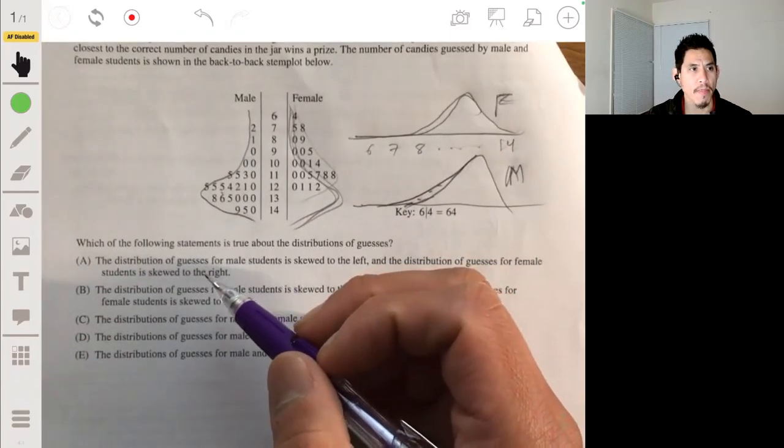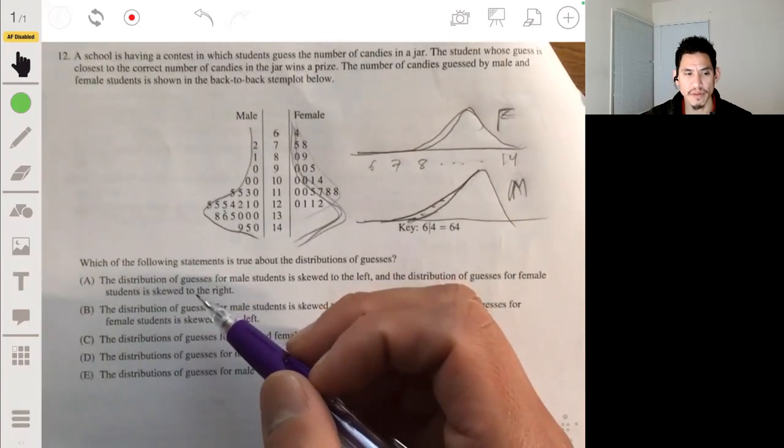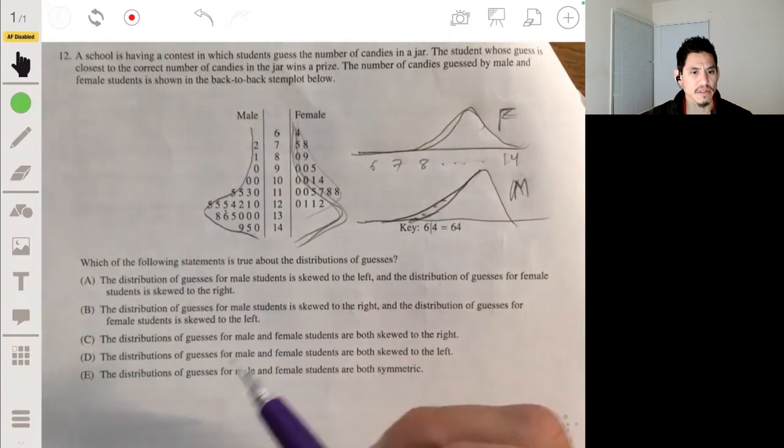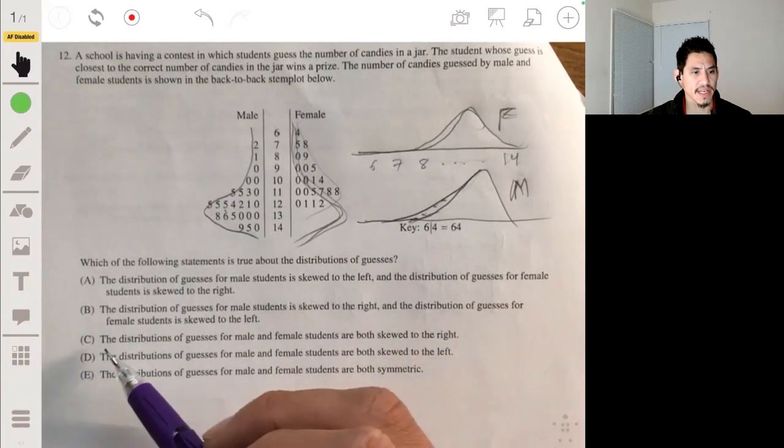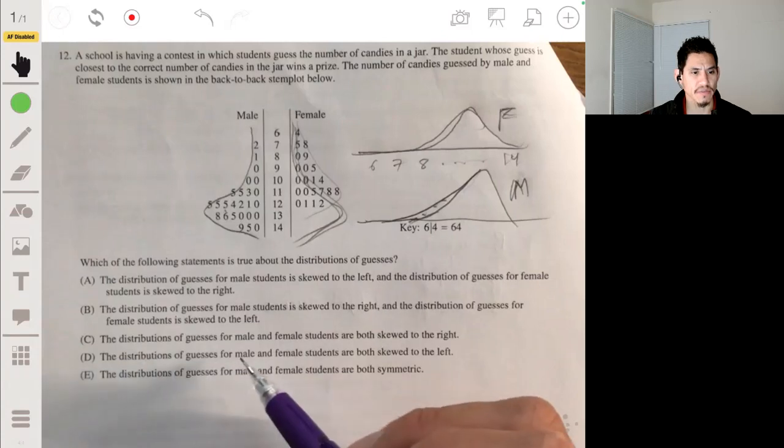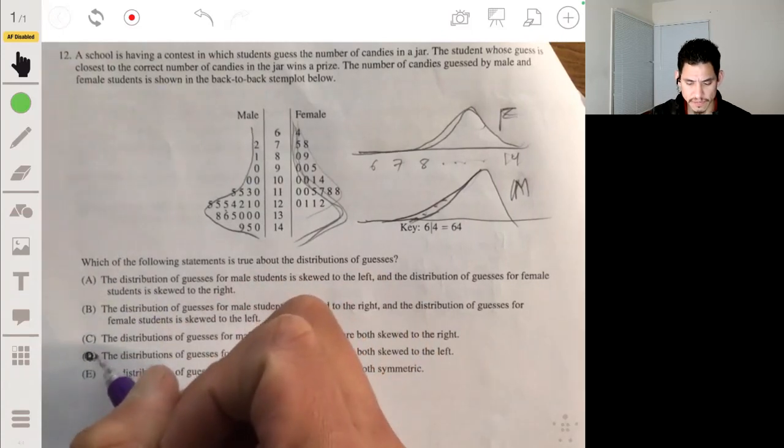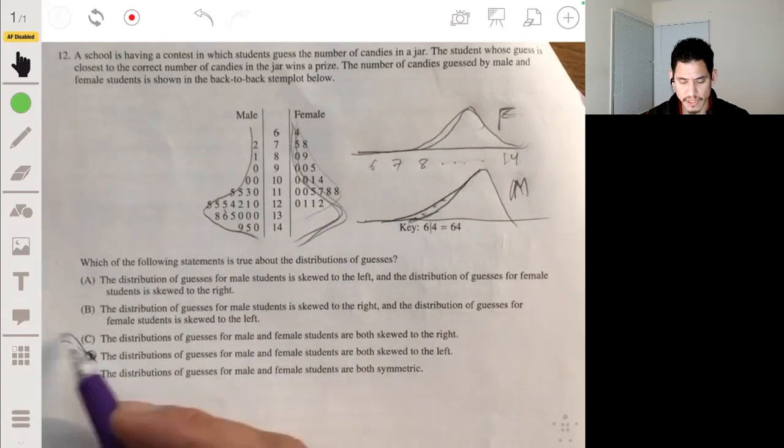So, it's skewed to the left, or both of them are skewed to the left. So, let's see what these would make, so they're not skewed to the right. Okay, so the answer would be A, the distributions of guesses for males and females are both skewed to the left. That would be the best answer. The answer would be D.